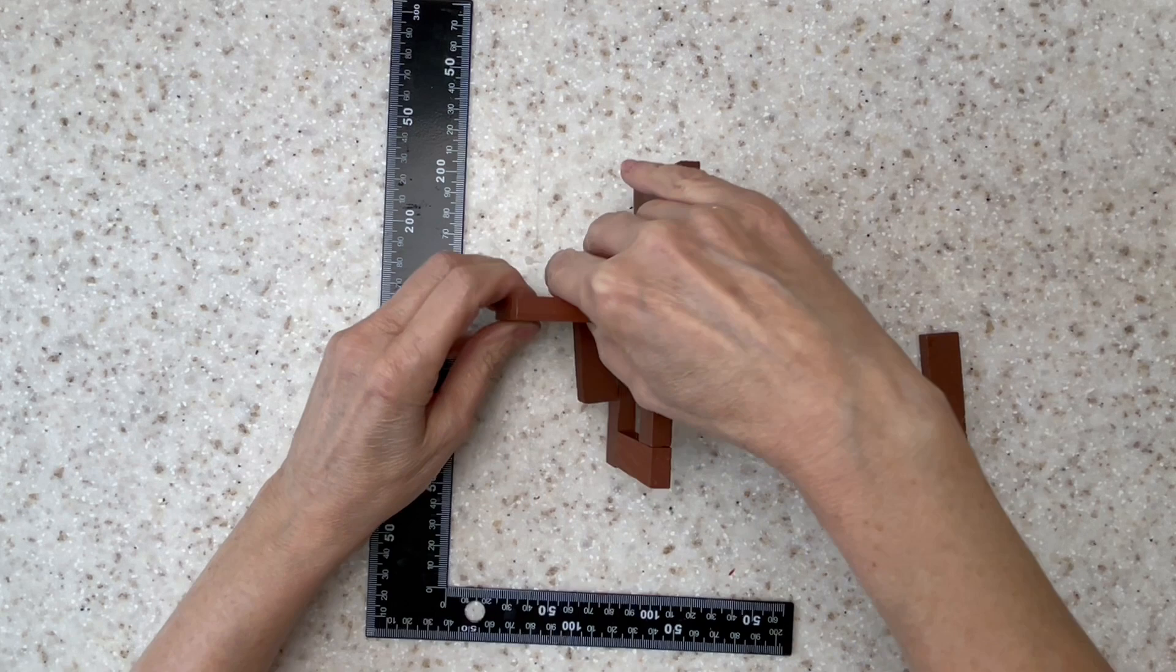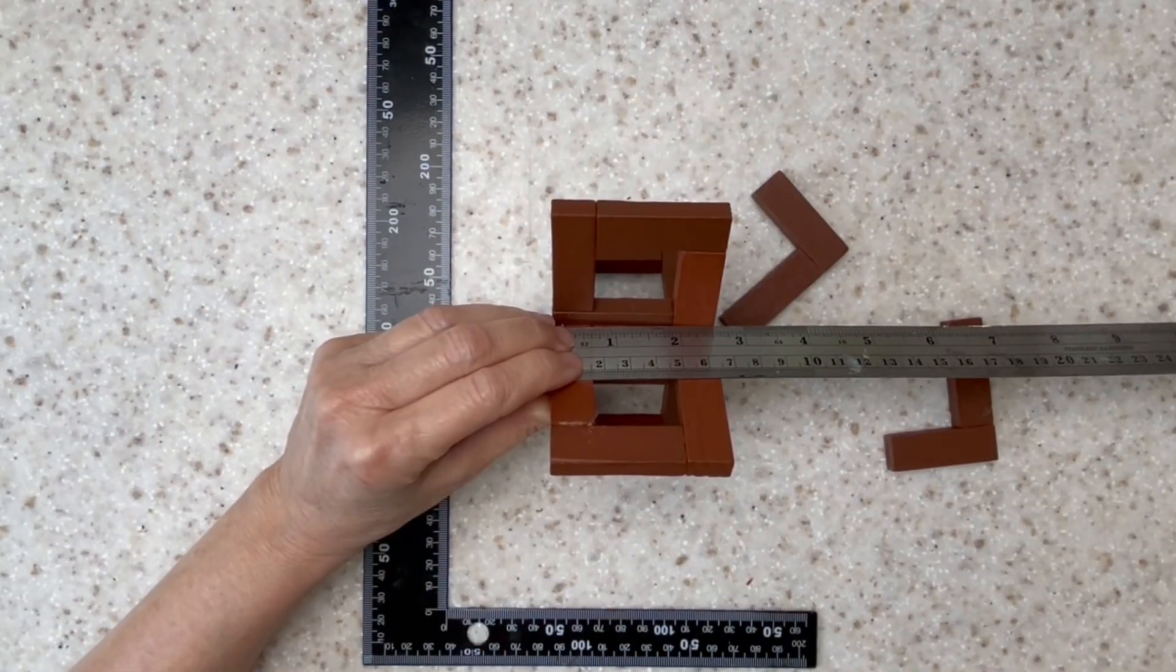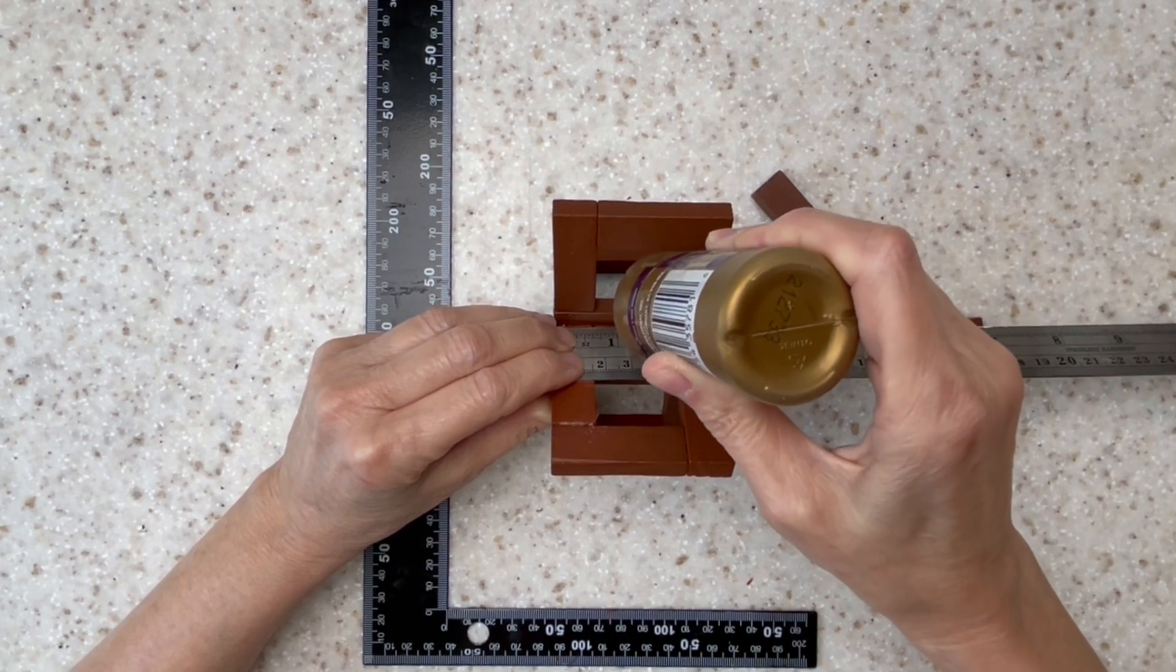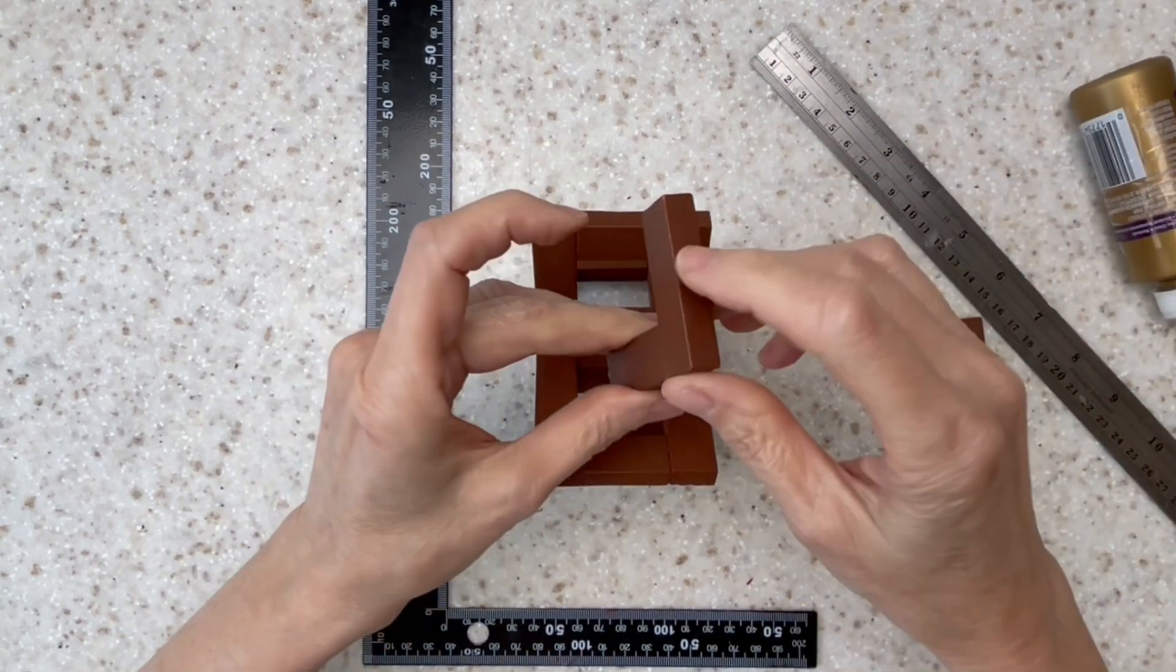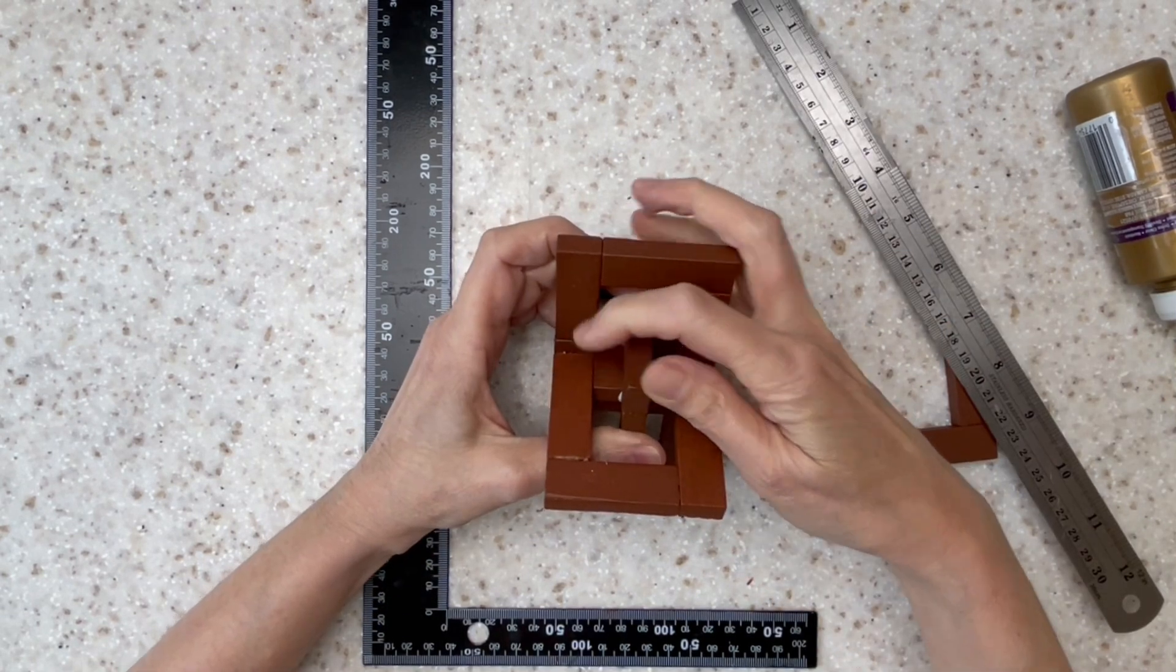Once you've found the proper position, turn your project to the side and place some glue right in the very center. That should be one and a quarter inches and place one L on top. You're going to want to let that dry.